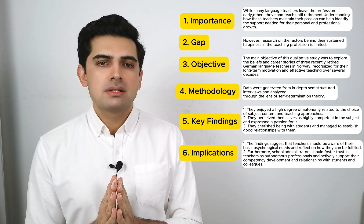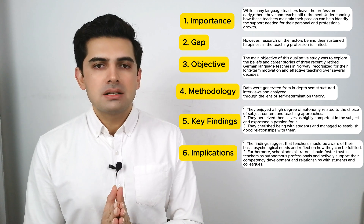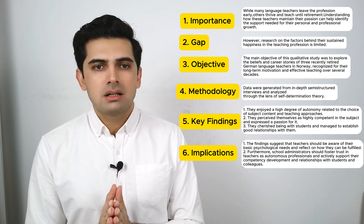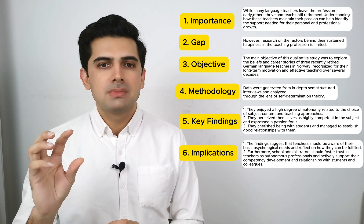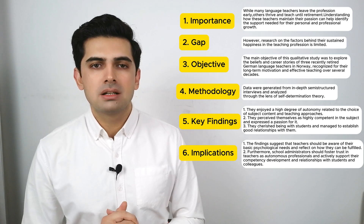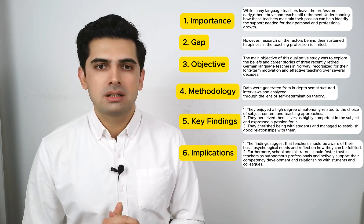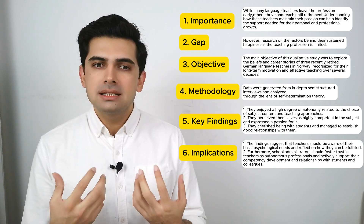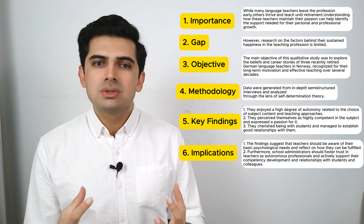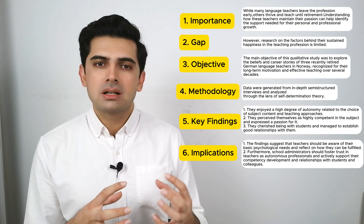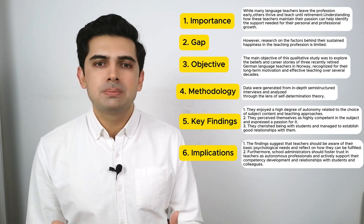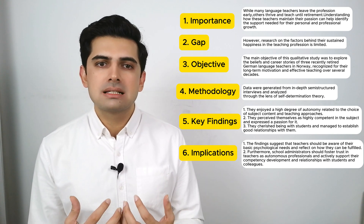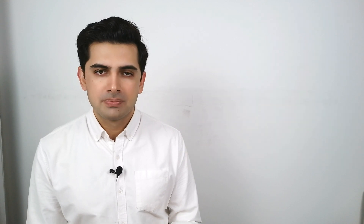Now, some researchers might mention that some journals have a limit on the number of words in an abstract. So obviously we can try to condense if we are bound by the word count, but these are generally the parts or the things that we mention in an abstract.